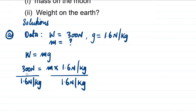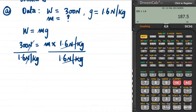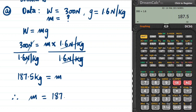After dividing, the 1.6 cancels completely and we remain with m on one side. On the other side, the newton units cancel and we divide 300 by 1.6, which gives 187.5. The remaining unit is kg, so: mass = 187.5 kg. Therefore, the mass on earth is 187.5 kilograms. That is the answer to part (a).